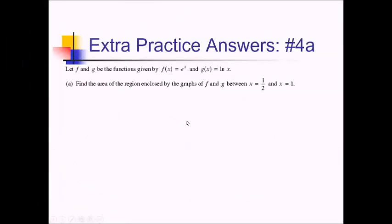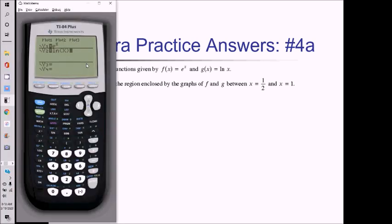For this calculator-based free-response problem, we're given the F and G functions, which are just e to the x and ln of x. Our first task is to find the area of the region enclosed by these two graphs along with the vertical lines x equals one-half and x equals 1. So let me start by graphing all of this out. I'll put e to the x in Y1 and use Y2 for G of x. I'm not sure on the window, so let me just do zoom 4.